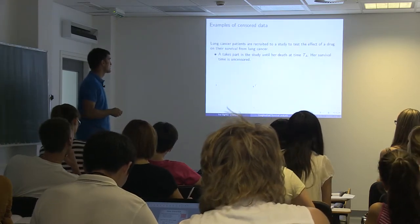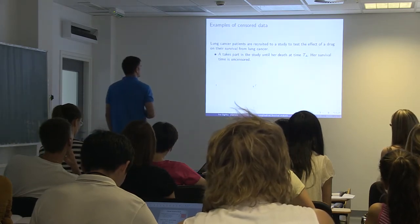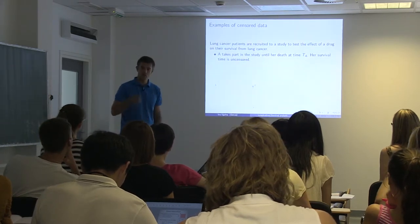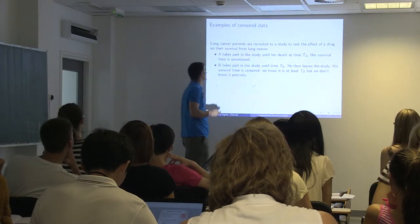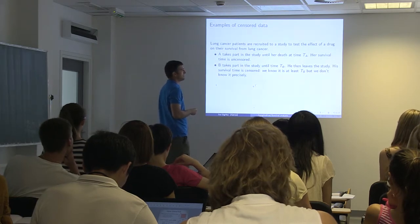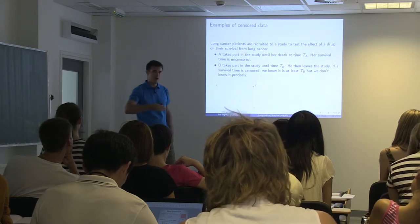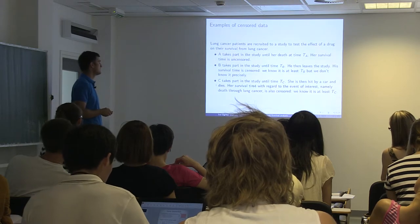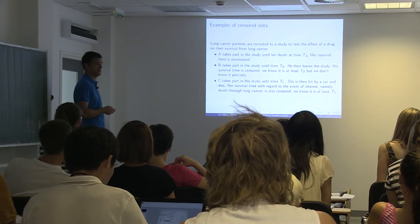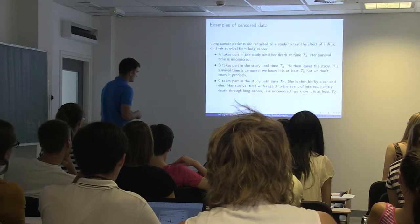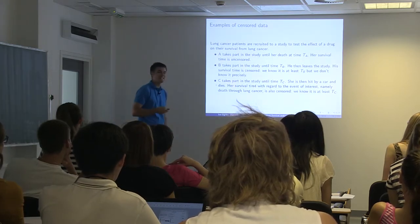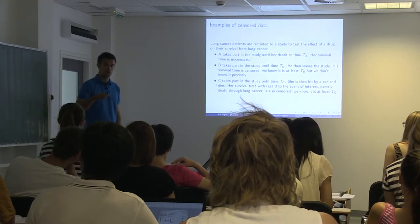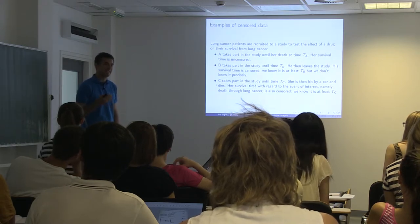Examples of censored data. Lung cancer patients are recruited to a study to test the effect of a drug on their survival from lung cancer. A takes part in the study until her death time at time TA. Her survival time is uncensored. You know when she started the study and you know when she died. B takes part in the study until time TB. He then leaves the study. His survival time is censored. You know that he survived until TB, but you don't know what happened after that. We know that it is at least TB, but we don't know it precisely. C takes part in the study until time TC. She is then hit by a car and dies. Her survival time with regard to the event of interest, namely death through lung cancer, is also censored. This is probably the most common mistake people like medical doctors do when they do research. They completely exclude people which didn't die, but you have some kind of information in it. You know that he survived at least TC time.